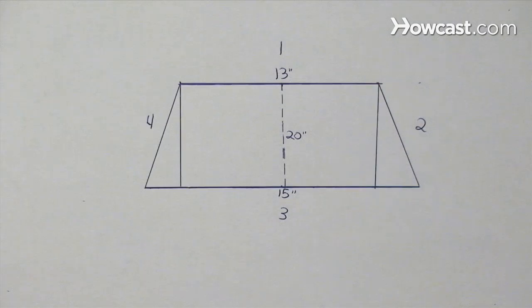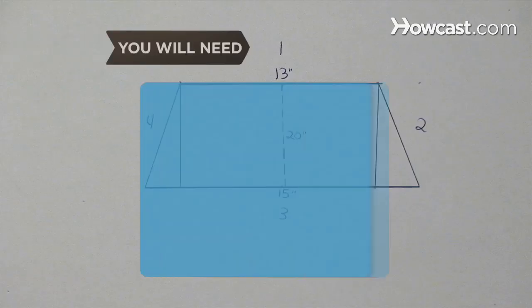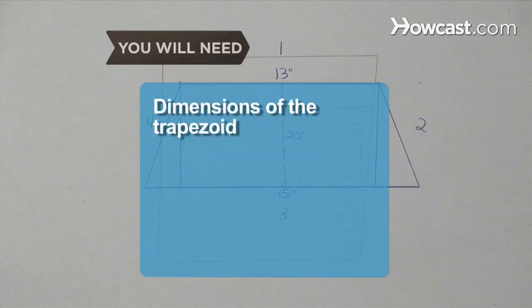Because a trapezoid can be dissected into a rectangle and two identical triangles, finding its area is easy. You will need the dimensions of the trapezoid and a calculator.